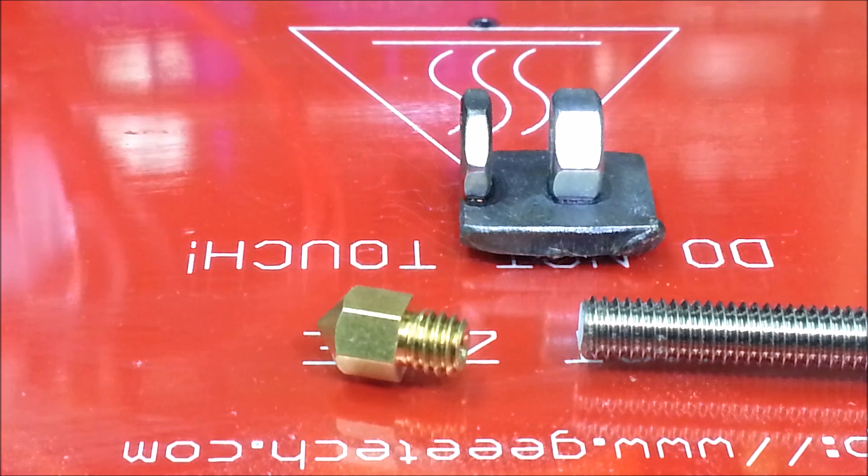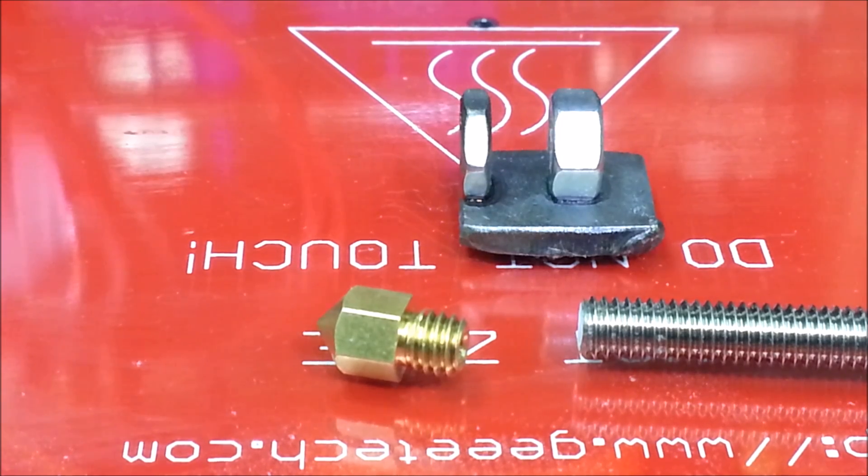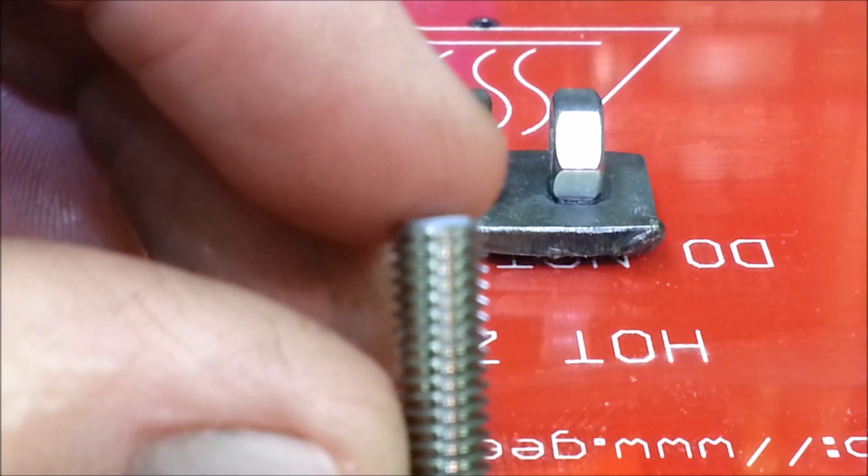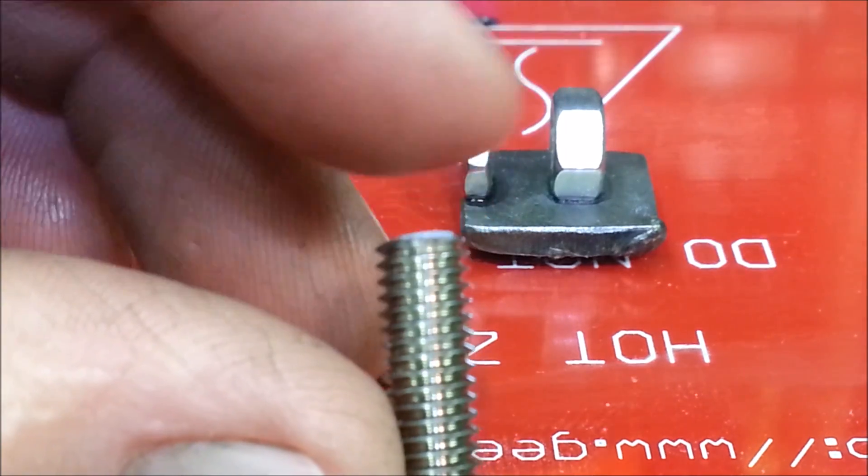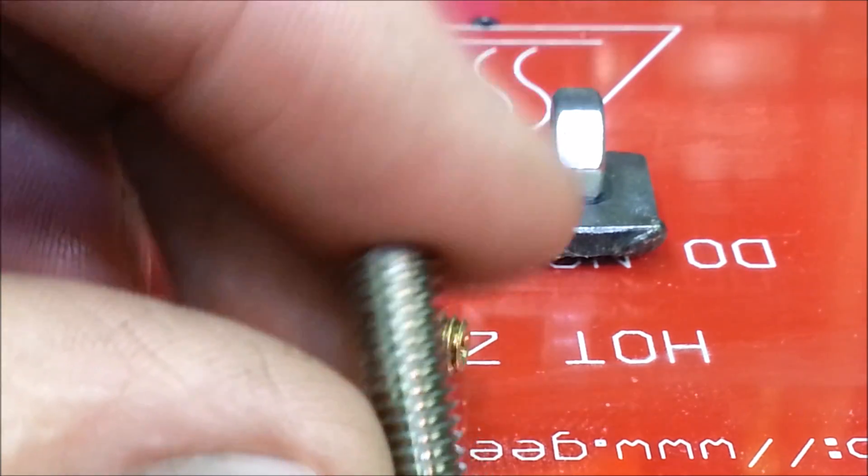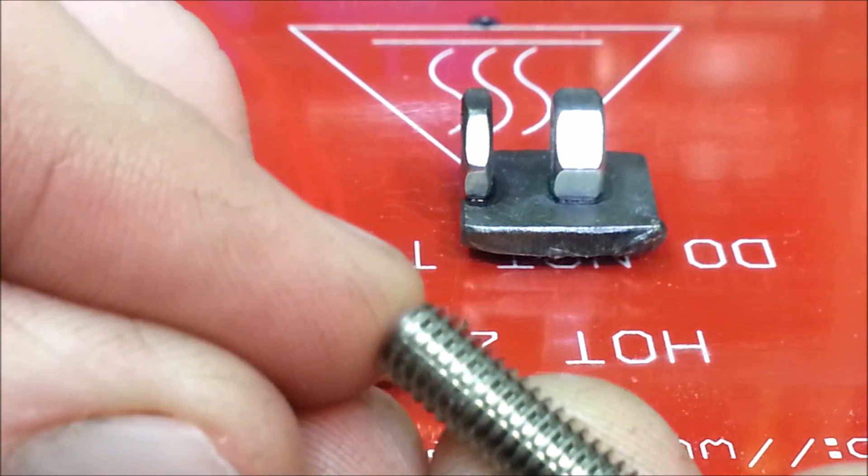A while back I changed out the nozzle thread on my extruder and I had an issue where I was printing and all of a sudden I had molten PLA coming out through the threads at the top of the heat block. One of the problems I figured out was the piece of Teflon tubing that comes in the new replacement nozzle throat was completely even with the threads.